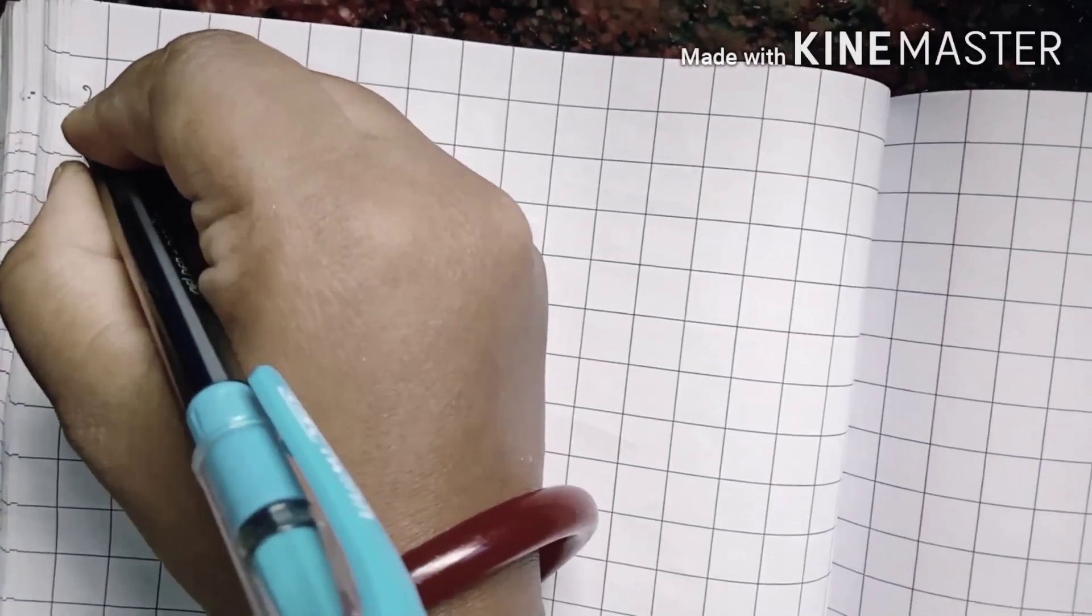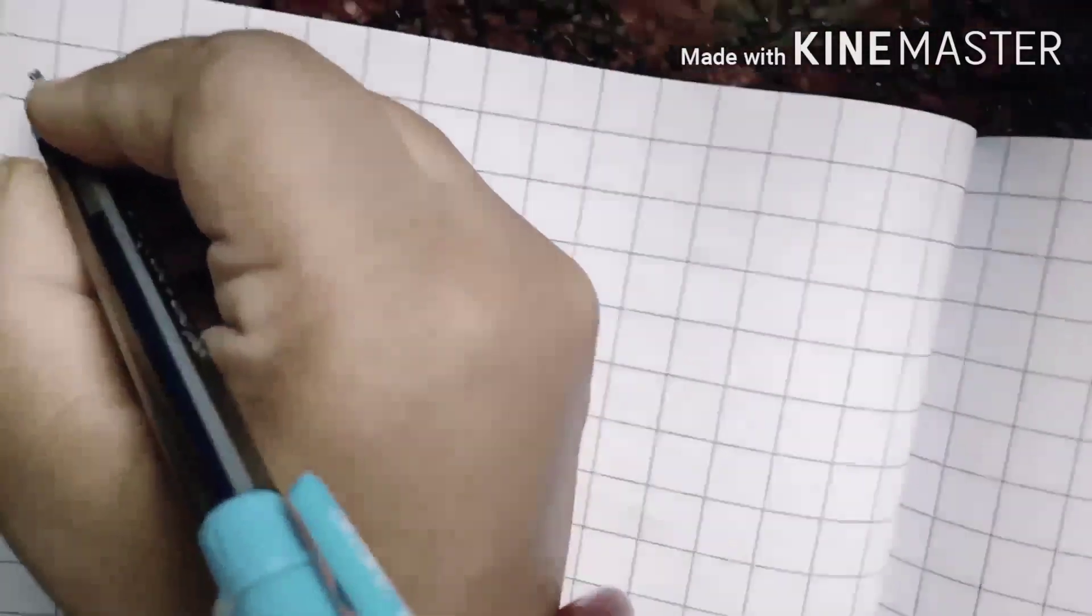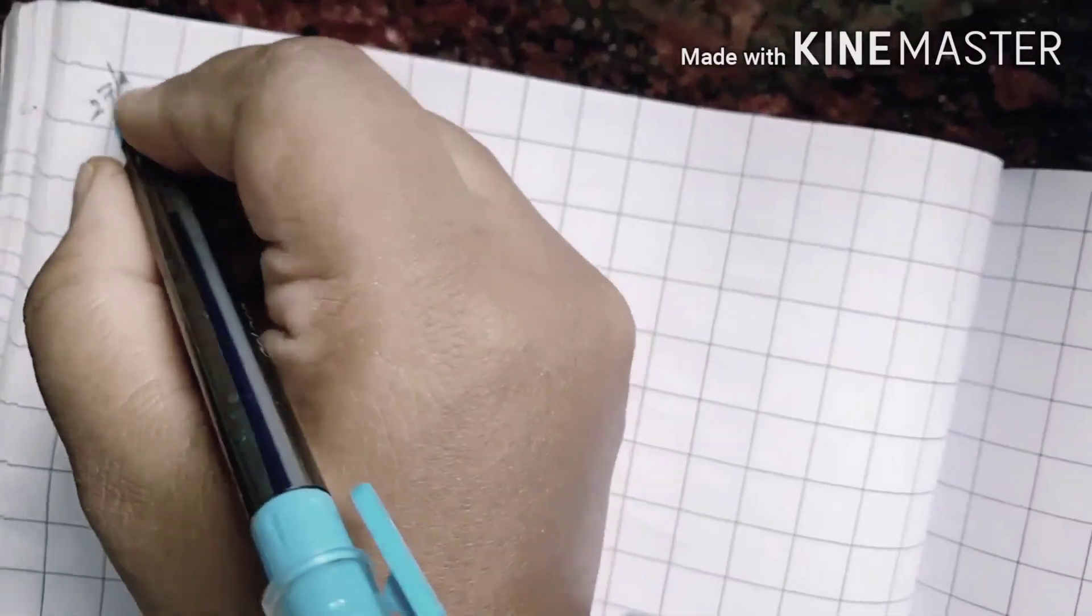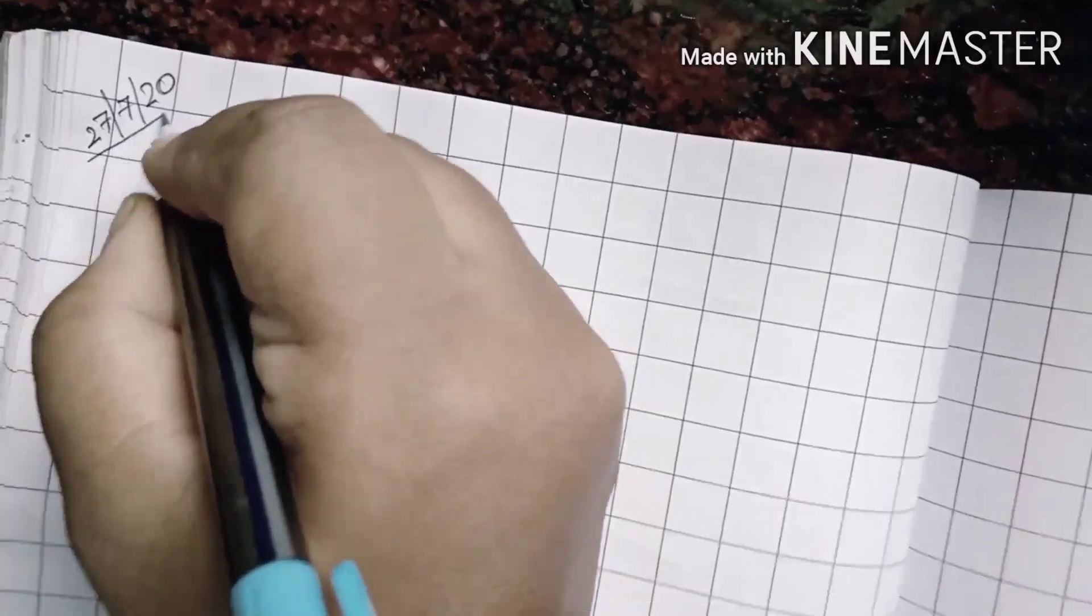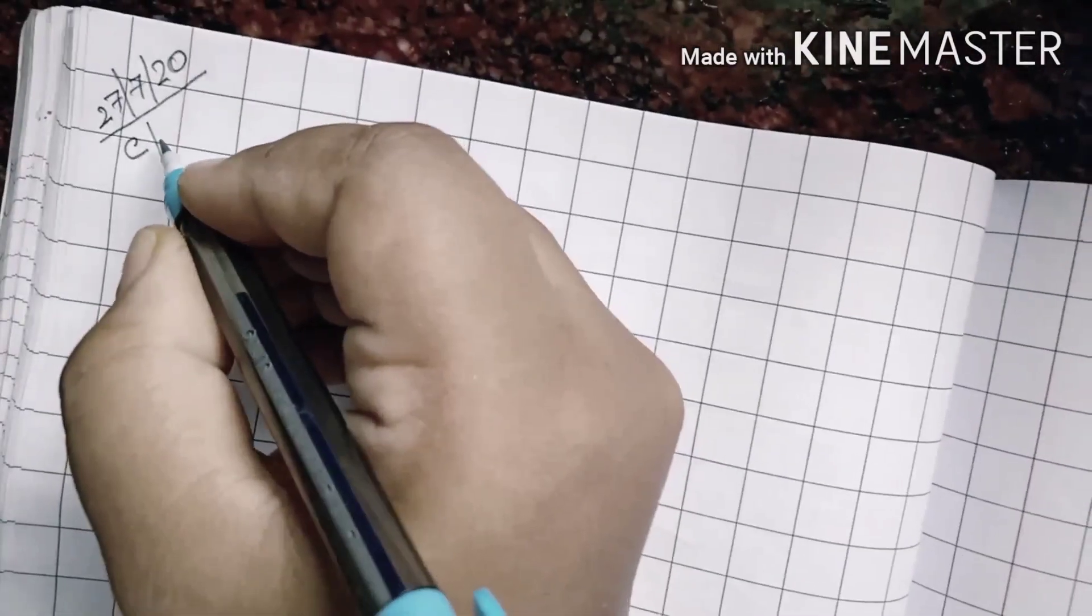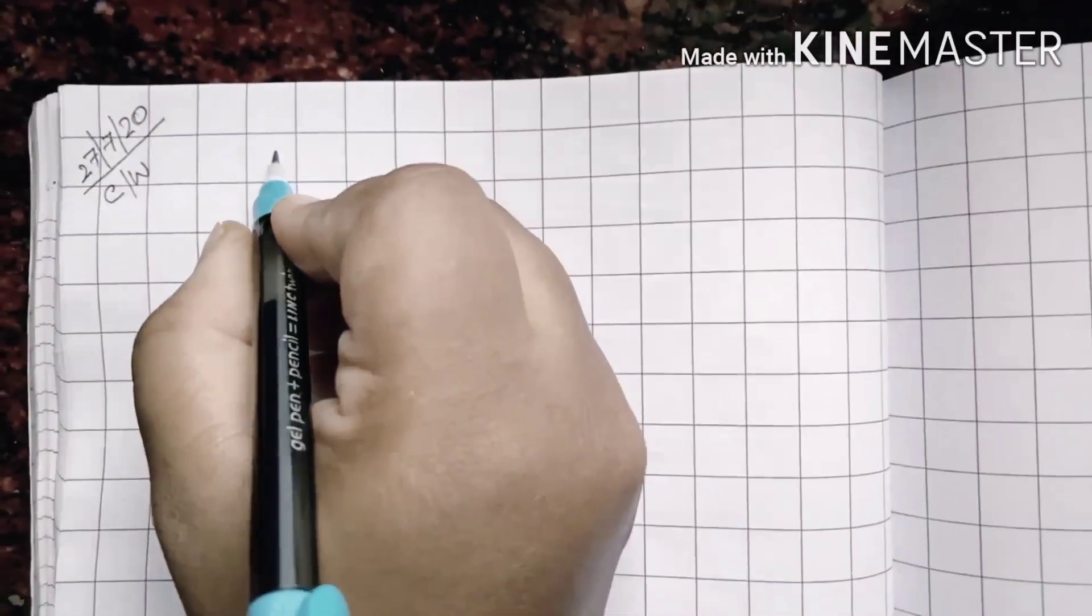So this is your math copy. We will now first write today's date. Today's date is 27, month is July, and the year is 2020. So for July we are writing 7. Then we will write here CW, classwork. Now leave this line.